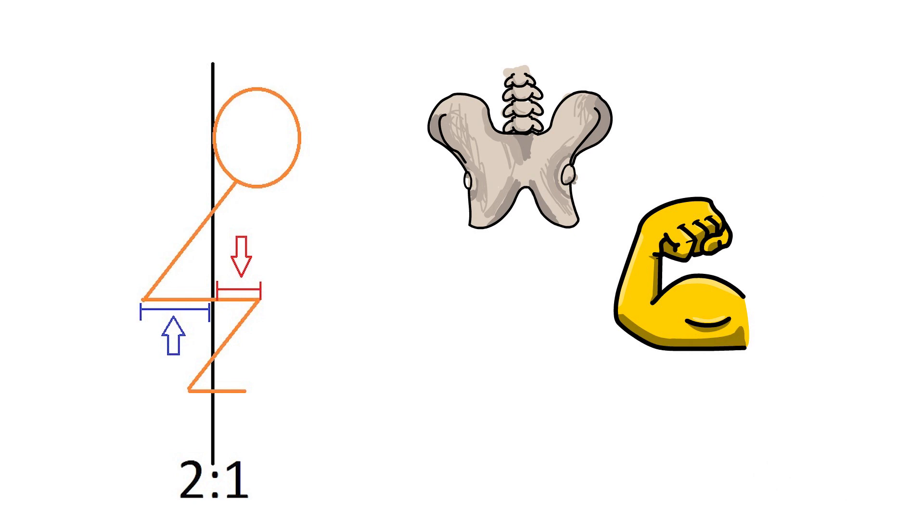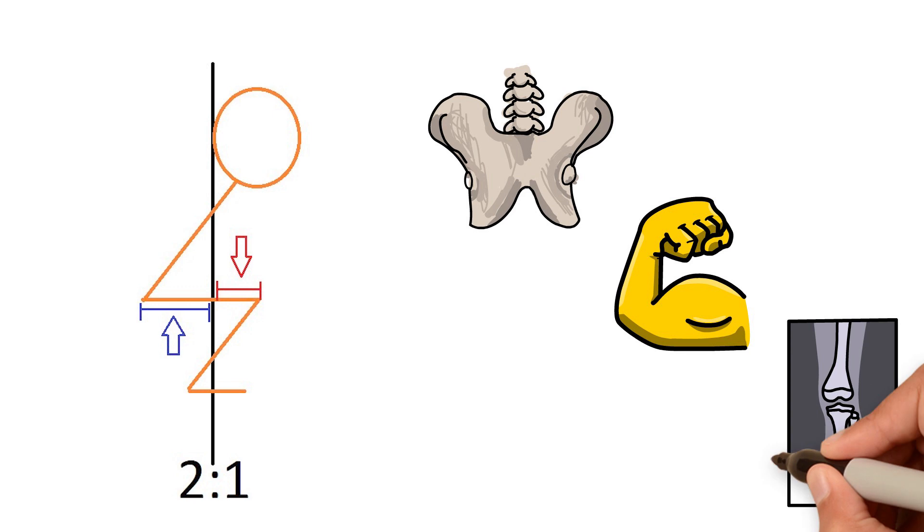As hip muscles are generally stronger than knee muscles, the proportion for lever arm ratio ideally should be aiming at two is to one ratio. Here's the thing though, everyone's built differently. Hence, this proportion changes with each individual.